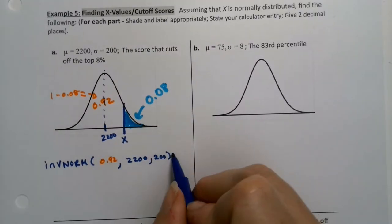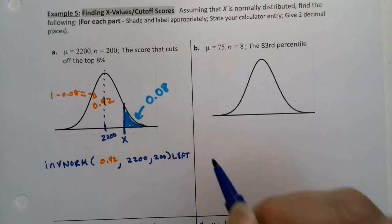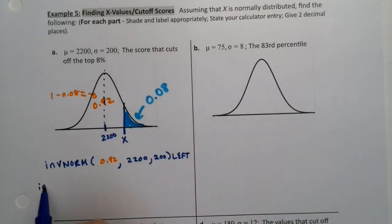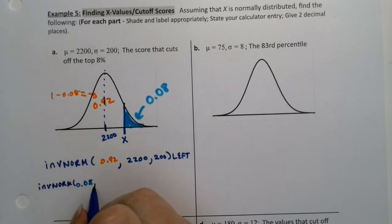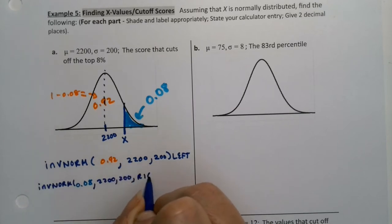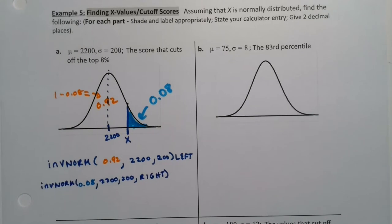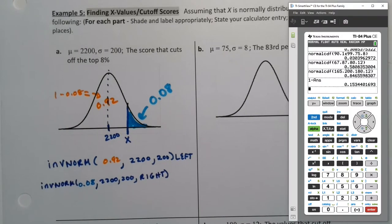Now, if you're using a newer calculator, what you're doing here is a left one. Now, I could also use, if I have a newer calculator, I can use inverse norm, and I can actually use the 0.08 and say 2,200, 200, but then I would put the word right in there because I'm going to the right. So either one of those should work. And of course, StatCrunch doesn't have any of these troubles.